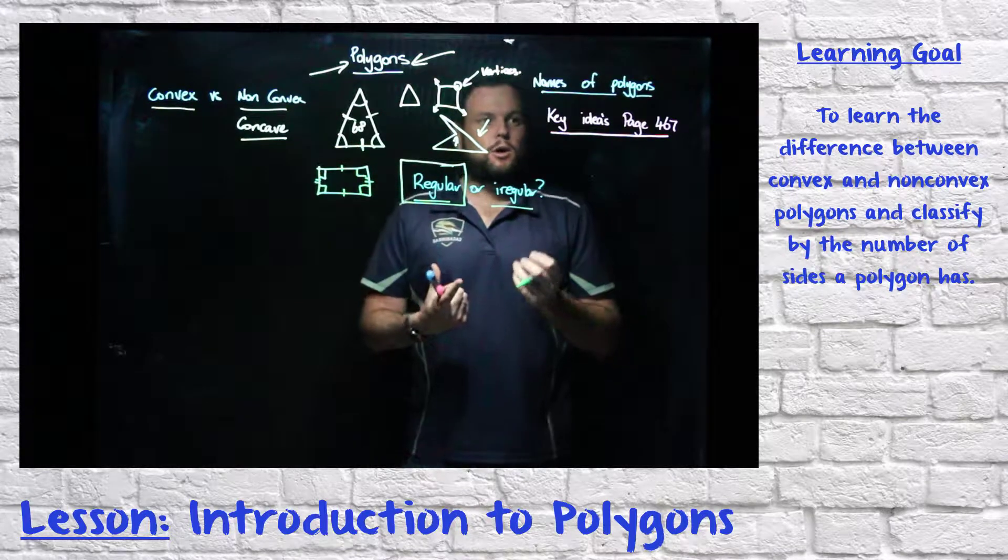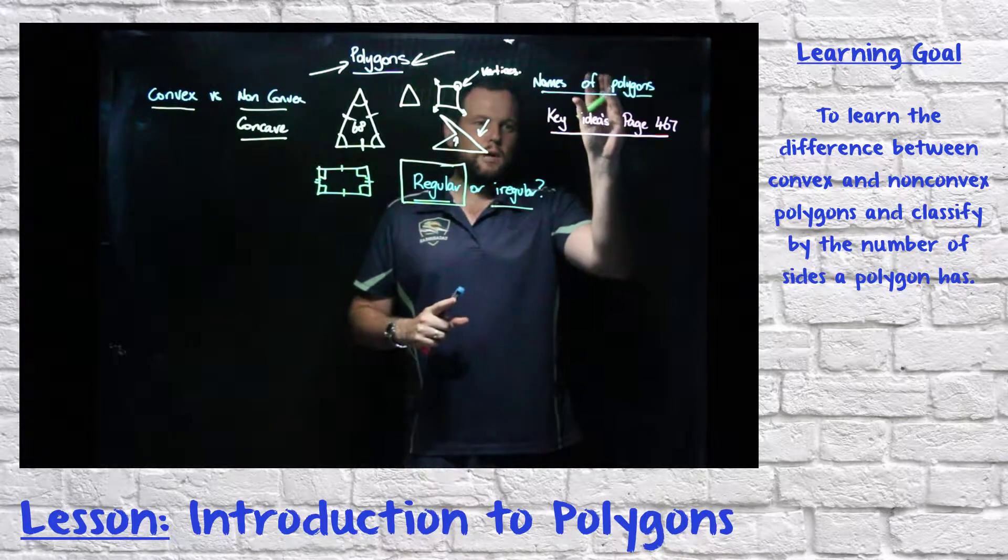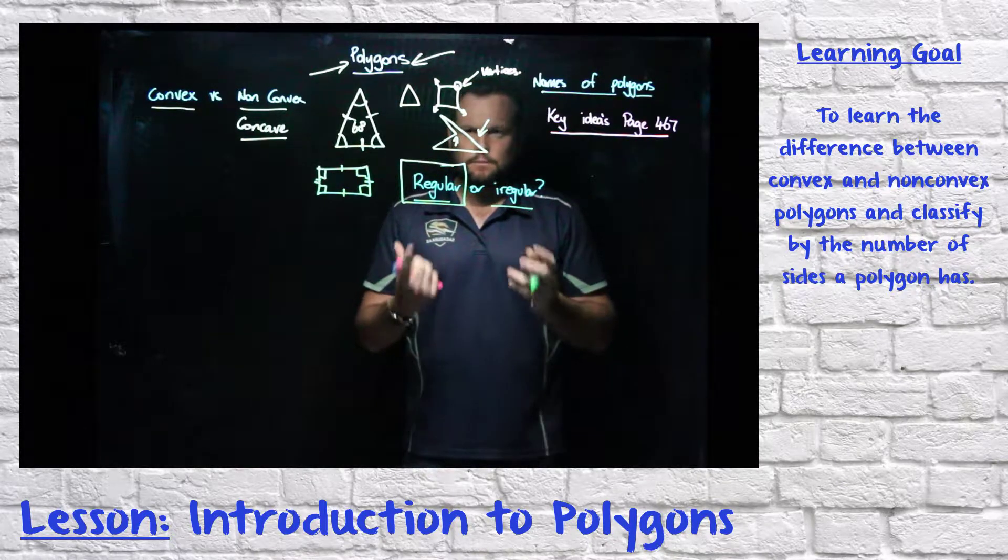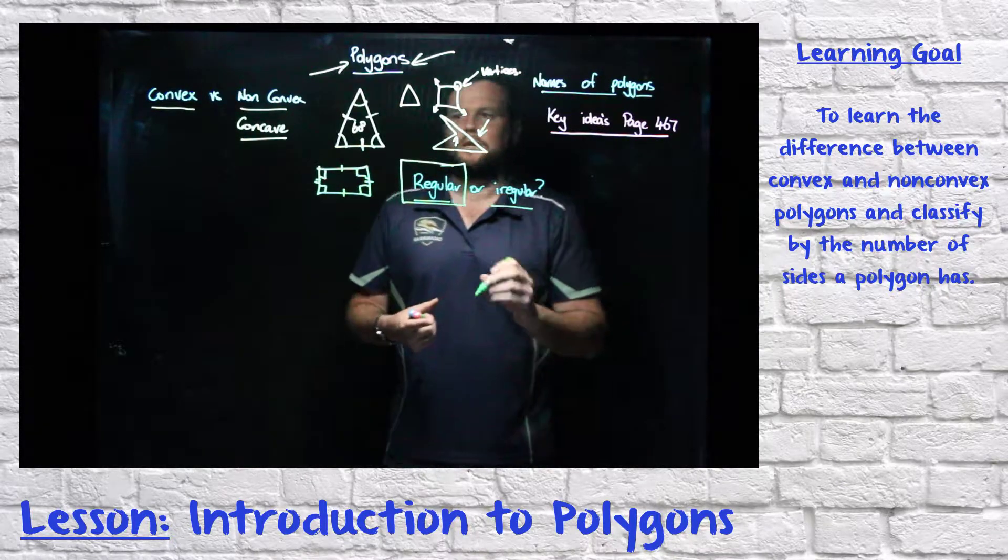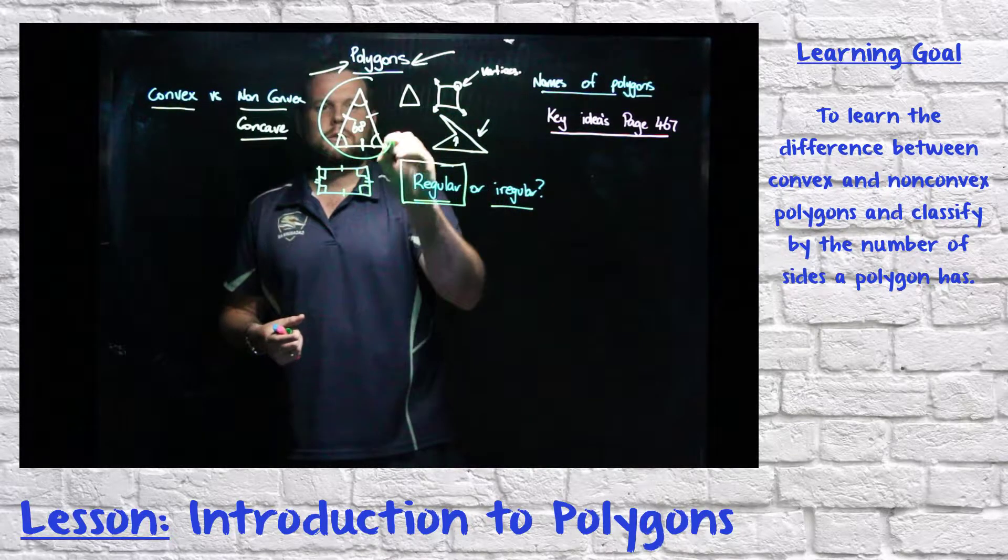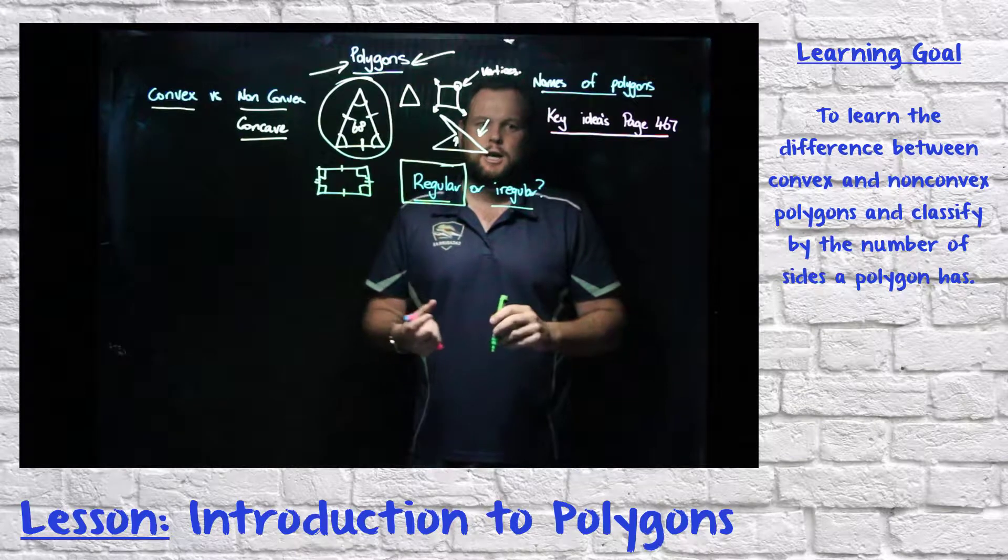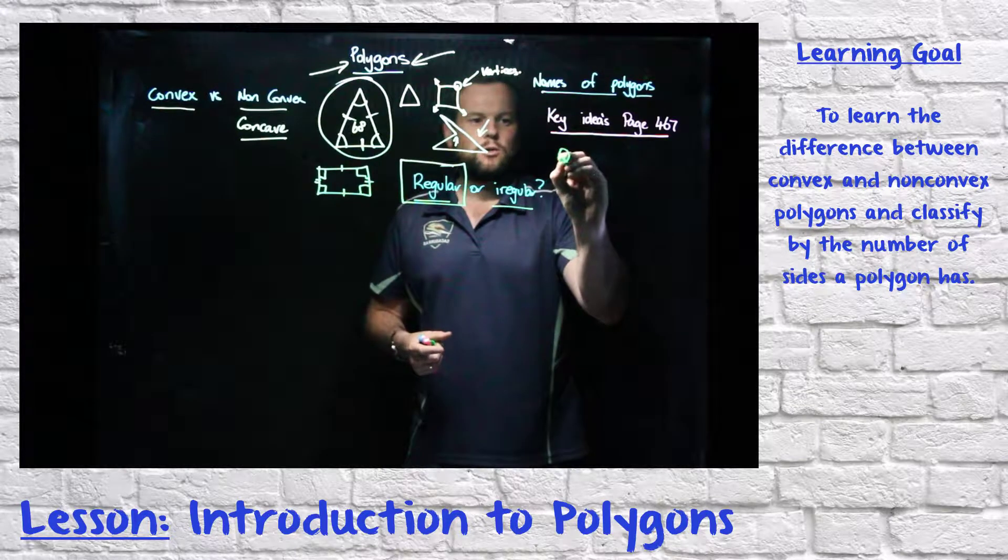When we're naming polygons, it's pretty important. We need to look at naming polygons by the number of sides that they have. The main two that we're going to be focusing on, obviously triangles, but also four-sided shapes. And four-sided shapes are called quadrilaterals.